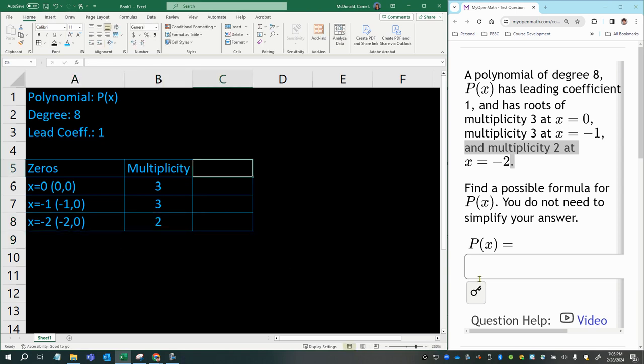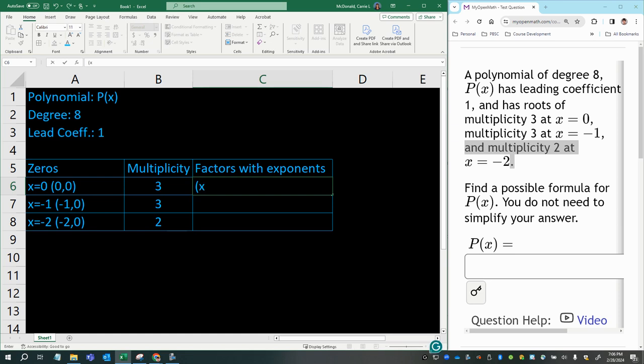So now we can use those multiplicities to create factors for our polynomial equation with their exponents. So these will be binomial factors. So for x minus zero, that would be x minus zero. That would be the factor.